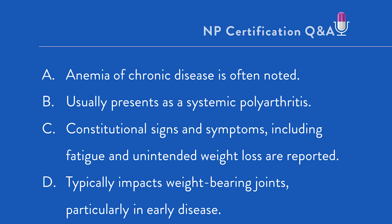Option C: constitutional signs and symptoms, including unexplained fatigue and unintended weight loss reported. Again, these are more likely to be found in the systemic arthritis forms, like rheumatoid arthritis and lupus. As a matter of fact, when you delve into the literature with both RA and lupus, particularly with lupus, it is not at all uncommon to find that the patient has had these symptoms of unexplained fatigue and unintended weight loss for many months prior to getting the diagnosis.